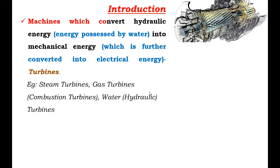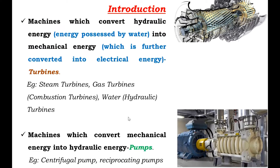The machines which convert hydraulic energy into mechanical energy are called Turbines. Examples of turbines are steam turbine, gas turbine, and water turbine. The machines which convert mechanical energy into hydraulic energy are called pumps. Examples of pumps are centrifugal pump and reciprocating pump.